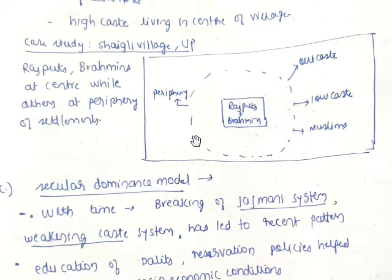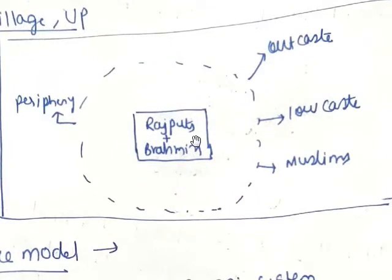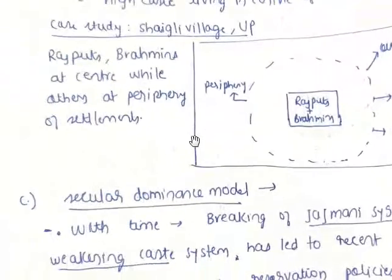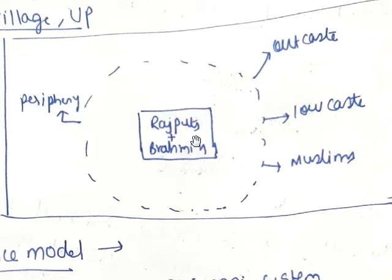As a case study, in Sagili village, Brahmins are located at the center while others are at the periphery of settlements. In this map you can see Brahmins at the center, and at the periphery are outcastes, low castes, and Muslims. The layers then include the merchant class, manufacturing class, and finally the untouchable class.